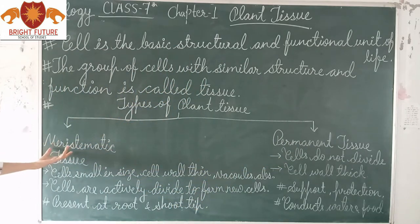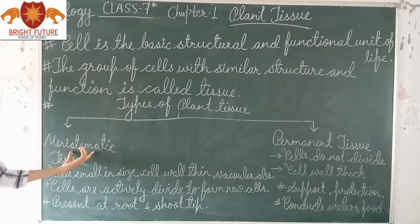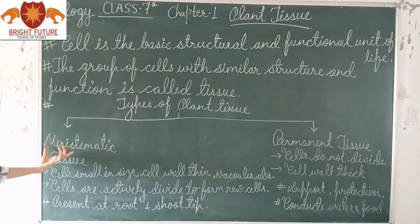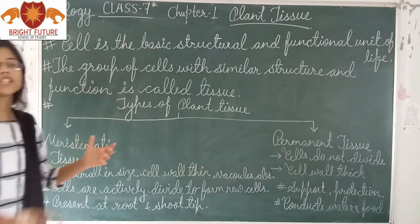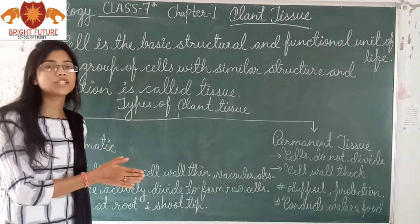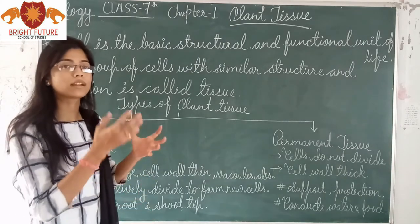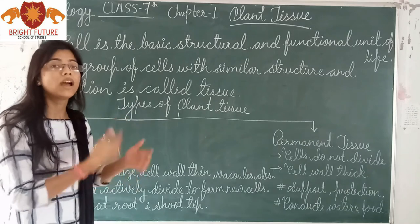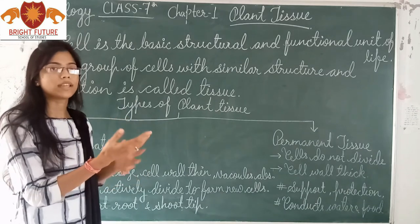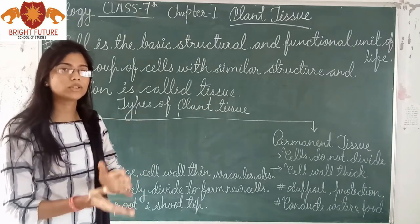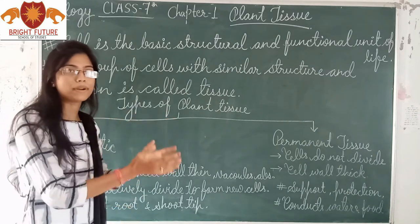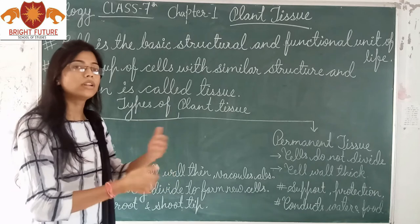So firstly I will describe what is meristematic tissue. Meristematic tissue, also called meristem, are those tissues which rapidly grow — means they continuously divide in number and grow.